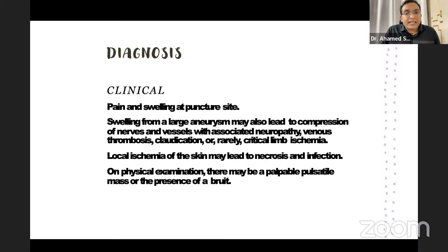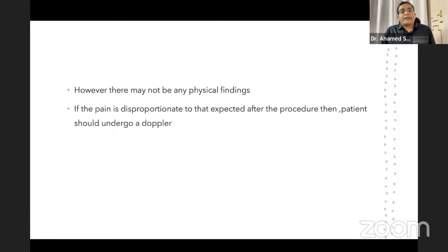Diagnosis: the patient will have pain and swelling at the puncture site. Swelling from a large aneurysm may compress the femoral nerve, cause venous thrombosis, claudication, and rarely critical limb ischemia. Local ischemia of skin may lead to necrosis and infection. On examination, there may be a palpable pulsatile mass or a bruit. However, there may be no findings in some patients. A high index of suspicion is needed — disproportionate post-procedural pain should prompt Doppler evaluation.